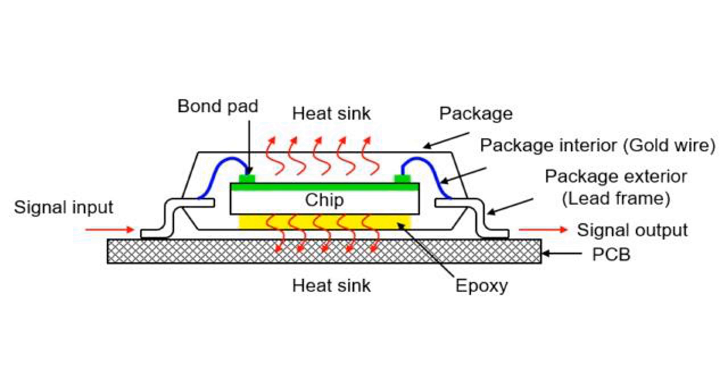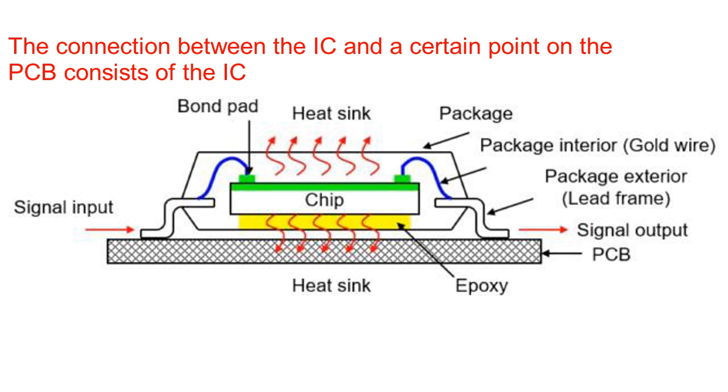From this cross section, you can see that the connection between the IC and a certain point on the PCB consists of the IC die with its corresponding parasitic components, the wire bond connection between the IC and the lead frame, and finally the leaded physical connection between the IC package and PCB.